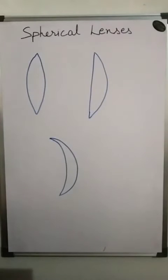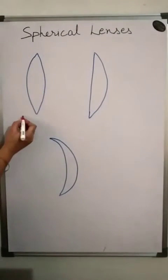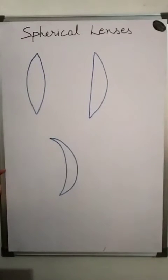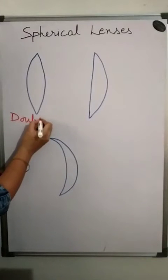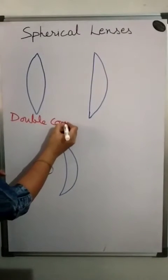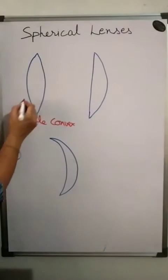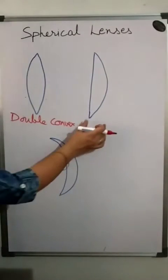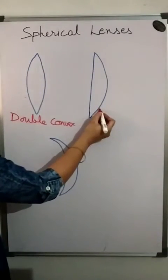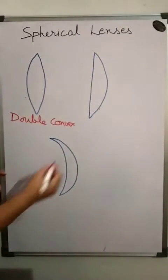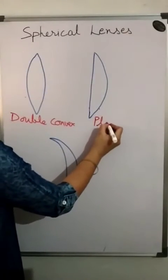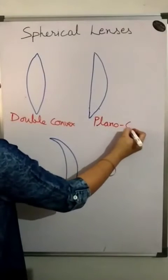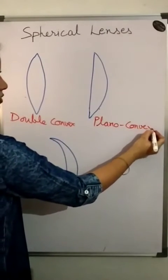We have three types of convex lenses. The first one is called bi-convex, or double-convex. You can see both sides are convex. The second type has one plain side and one convex side, so we call it plano-convex.